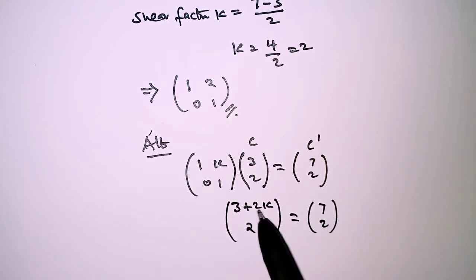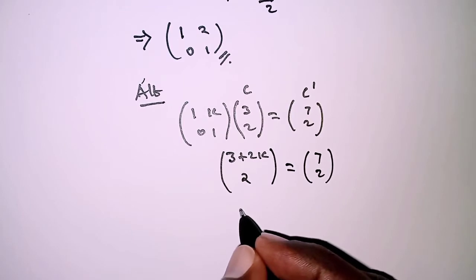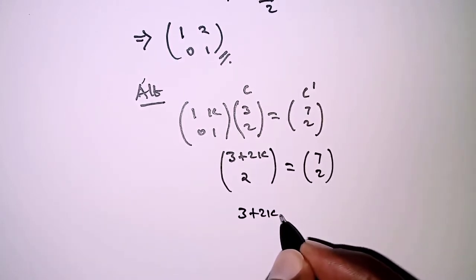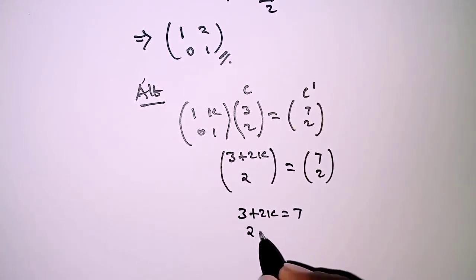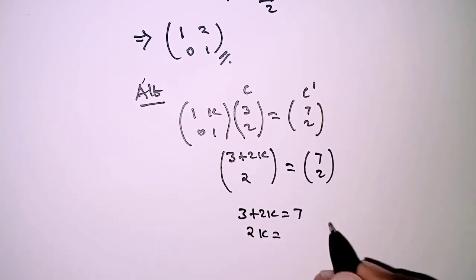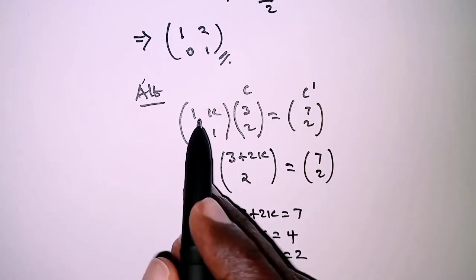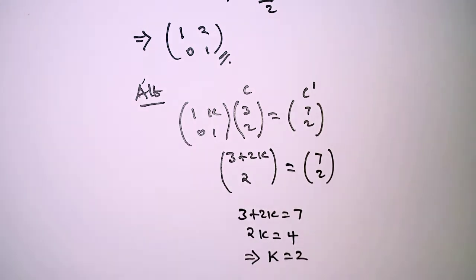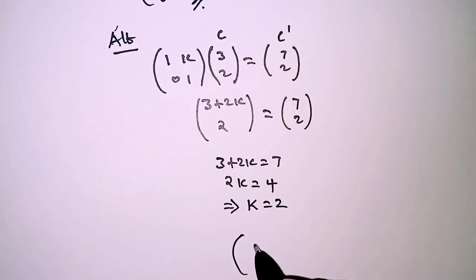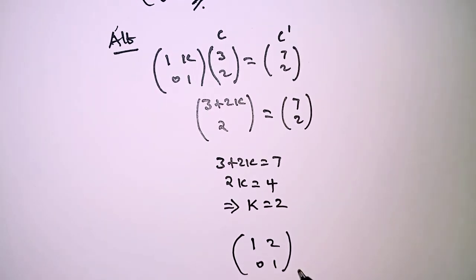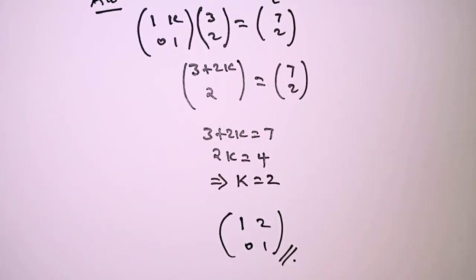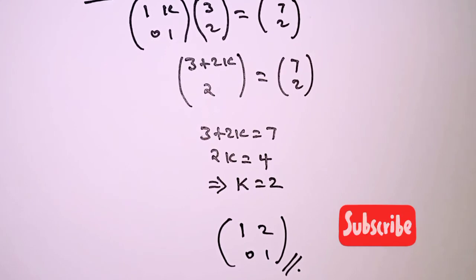Equating the upper part: 3 plus 2k equals 7, so 2k equals 7 minus 3, which is 4, implying k equals 2. Substituting this into the shear matrix gives [1, 0; 2, 1], confirming the same result. That is it for this question — thank you for watching, hope to see you in the next video.